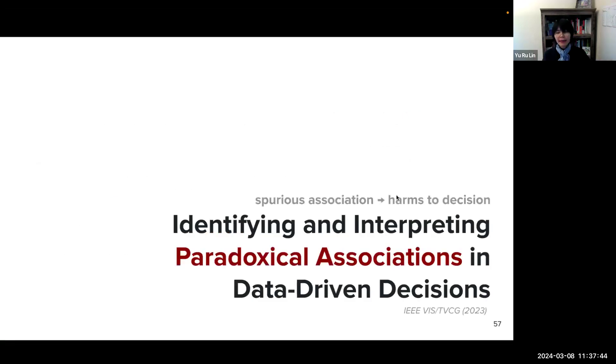So that is the first work. So we talked about machine's blind spots. How about human's blind spots in the data-driven decision making? So in the following work, we deal with the problem of identifying and interpreting this paradoxical association in data-driven decision process.